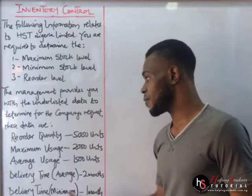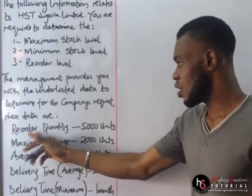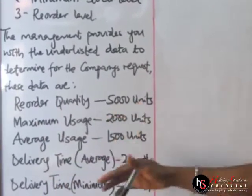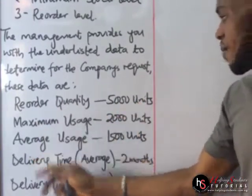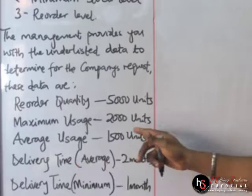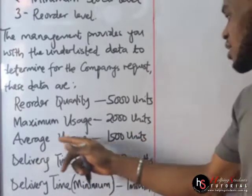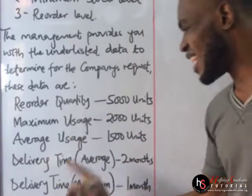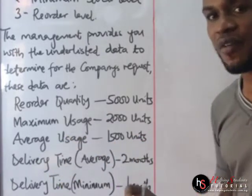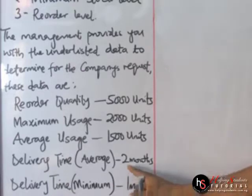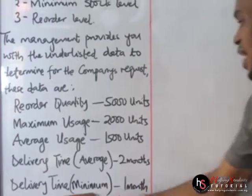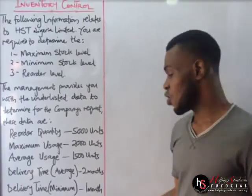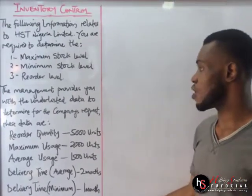The data are: reorder quantity — 5,000 units; maximum usage — 2,000 units; average usage — 1,500 units; delivery time average — 2 months; and delivery time minimum — 1 month.